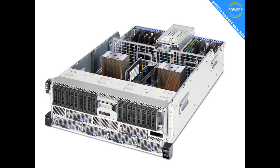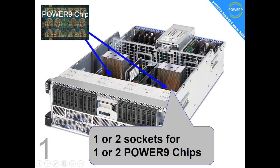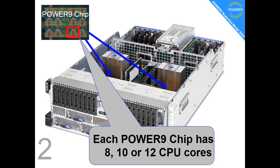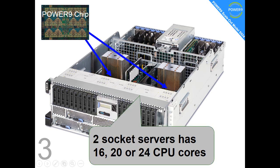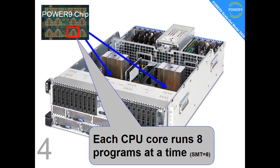If we take off the front panel and lift the lid, we can see inside the computer. Fact number one: we can have one or two sockets for one or two Power 9 chips. If you look at the Power 9 chip in the top left, you can see a repeat pattern — these are the individual CPU cores, think of those as a computer in its own right. A chip can support 8, 10, or 12 CPU cores, so the server can hold 16, 20, or 24 CPU cores in total.